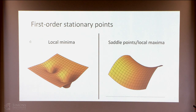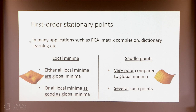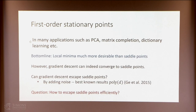First-order stationary points can be of two types: either local minima or saddle points. Even though gradient descent can converge to either, they behave quite differently in practice. In many matrix factorization applications, local minima are actually quite good — their values are essentially the same as or very close to the global minimum — while saddle points are not good at all. There can be many more saddle points in the ambient space, and they can be quite poor in function value compared to the global optimum.